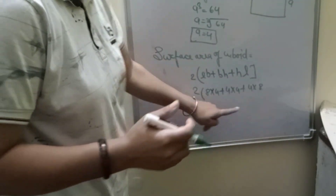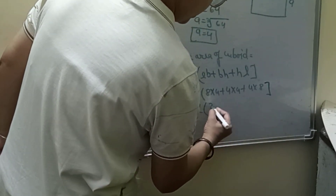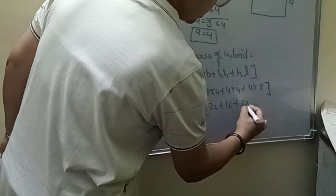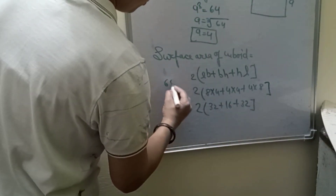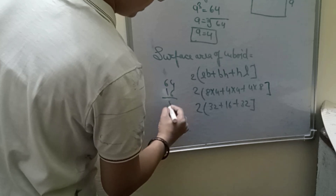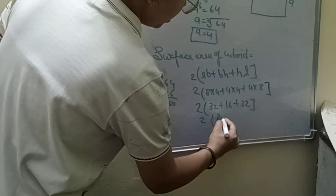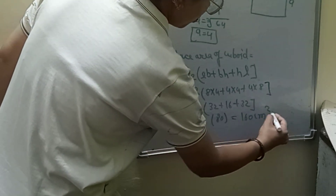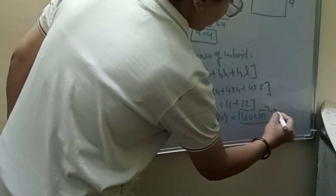The length is 8 and the remaining values are 4 and 4. So 2 × (32 + 16 + 32) = 2 × 80 — wait, 64 + 16 = 80, then 2 × 80 = 160 cm². That is the surface area of the cuboid.